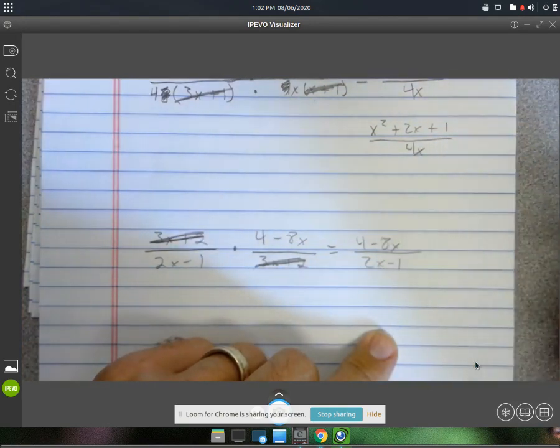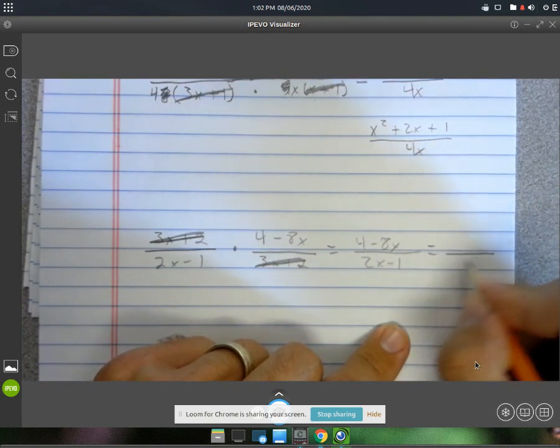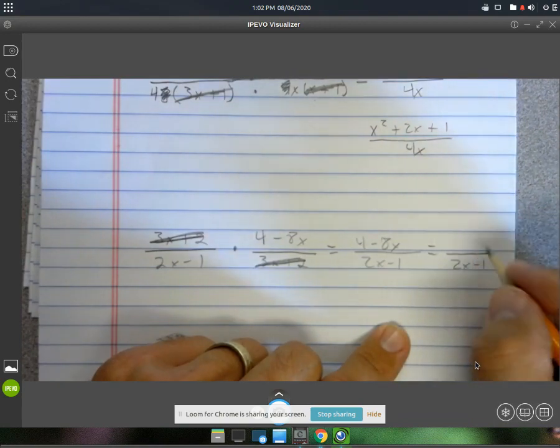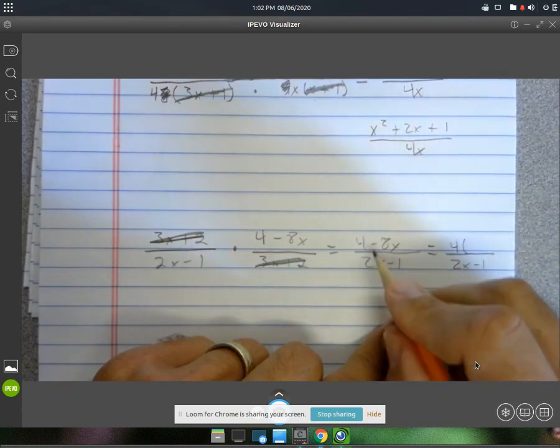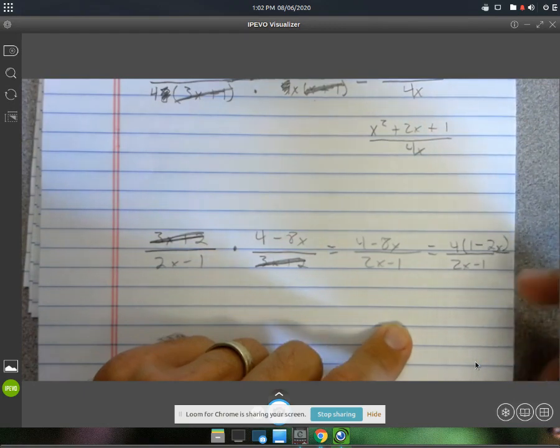This will factor. You can take a 4 out of both terms. So we'll still have our 2x minus 1. And up there, if we factor out a 4, this is going to be a 1 and a minus and a 2x.